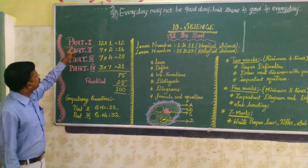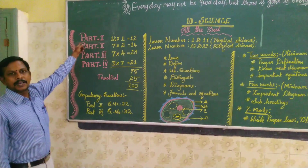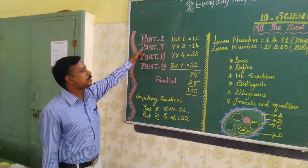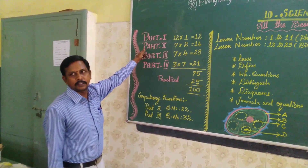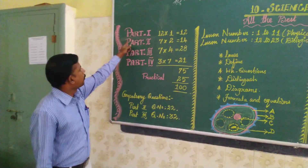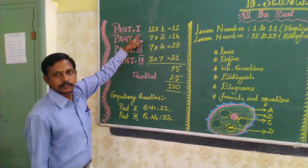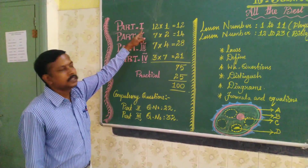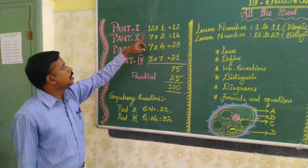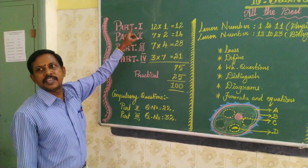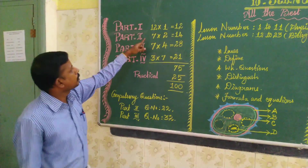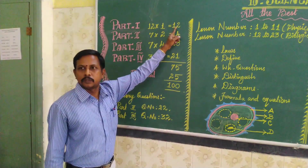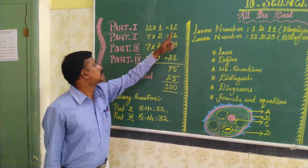So we must know the four types of questions. What is the question pattern? Part 1: choose the correct answer. In this, 12 questions are asked. So 12 into 1 equals 12 marks.